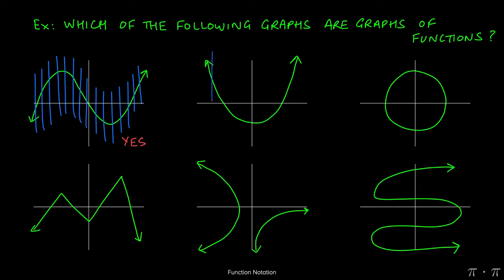Moving on to the next graph, the top middle, we see that as we make these vertical lines, no matter where we make them, the vertical lines only intersect with the graph in one point. That means that this also is a function because it passes the vertical line test.